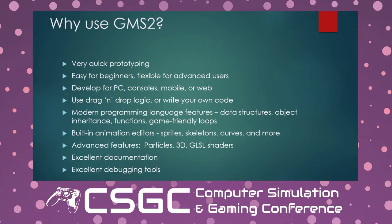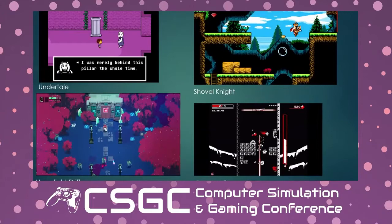Debugging tools are great too. Pretty much all the main debugging features you'd expect are there — you can step through your code one line at a time, inspect objects as your game is running, and see what state variables are in. There are also some examples of mainstream indie games designed in Game Maker, just to allay any doubts that it couldn't be used for major indie game development.